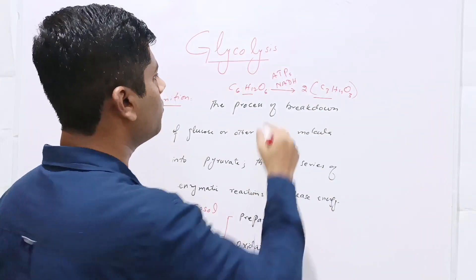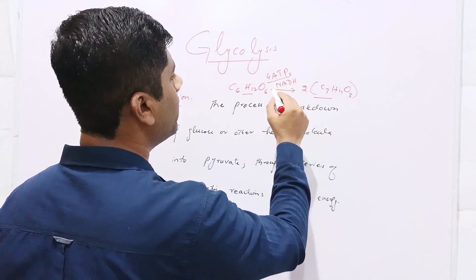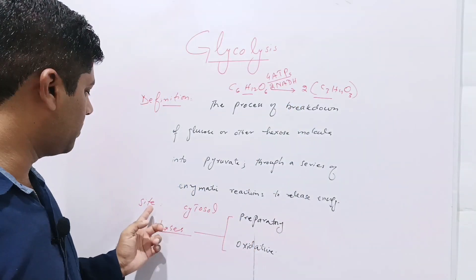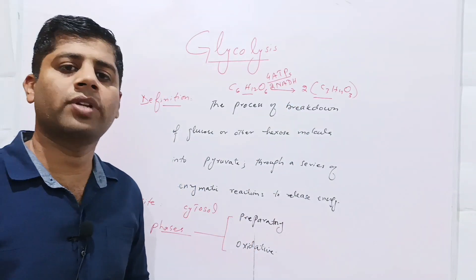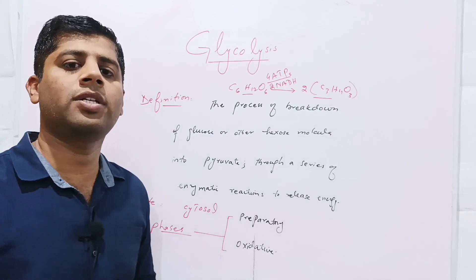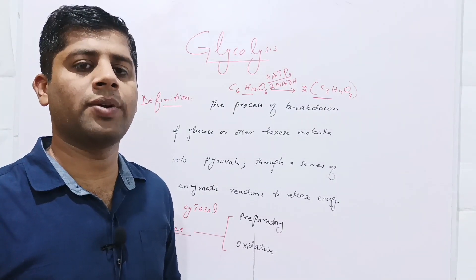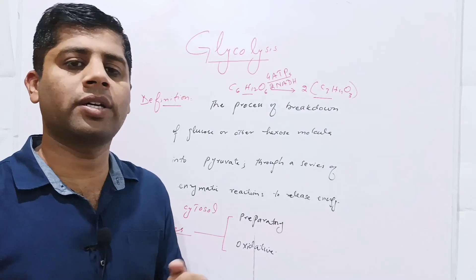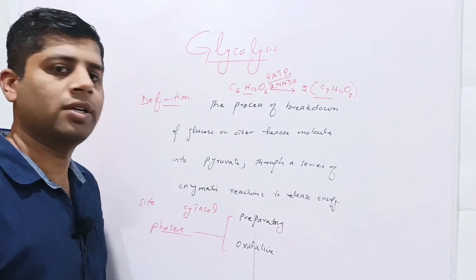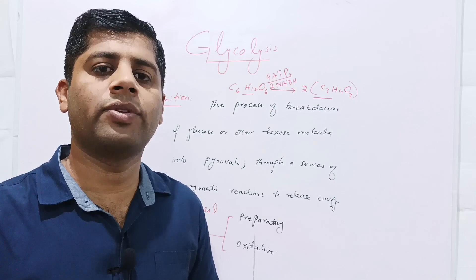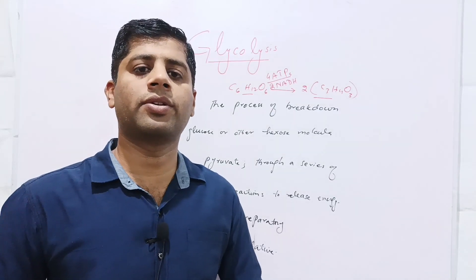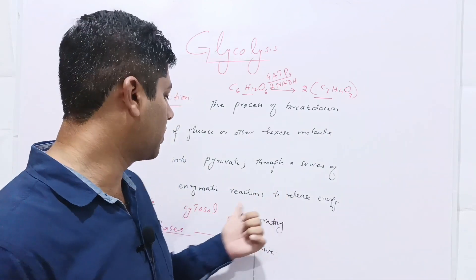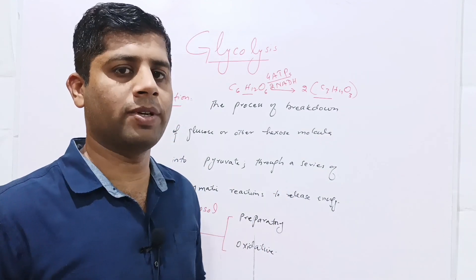In the glycolysis process, four ATPs are yielded and two molecules of NADH are released. The process of glycolysis takes place in the cytosol of the cell. Cytosol is the fluid portion of the cytoplasm. Unlike other steps of respiration — the Krebs cycle and electron transport chain, which take place in the mitochondria — glycolysis occurs in the cytosol or cytoplasm of the cell.